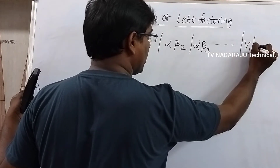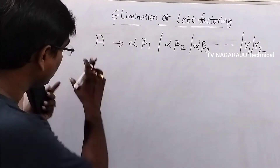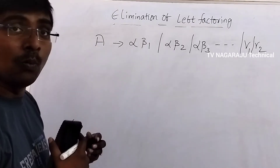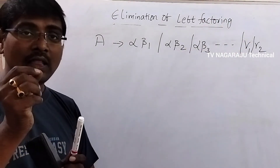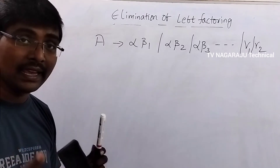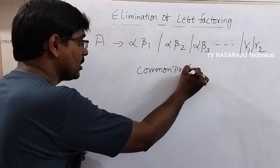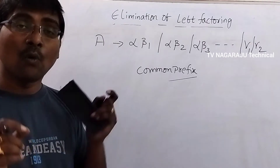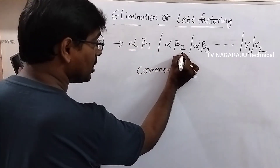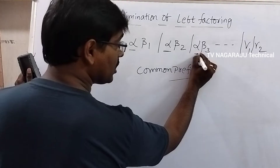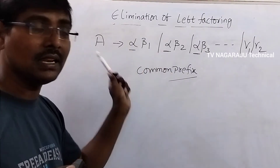The grammar is followed by some non-terminals gamma1, gamma2, and so on. Observe that non-terminal A contains more than one production. If more than one production on the right-hand side contains a common prefix, then that is called left factoring. Production one contains alpha, production two also contains alpha, production three also contains alpha.